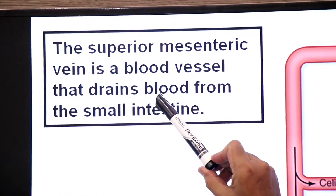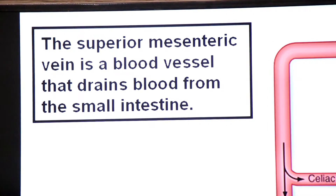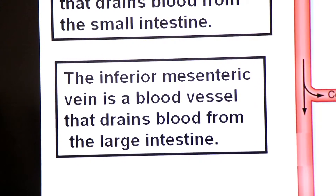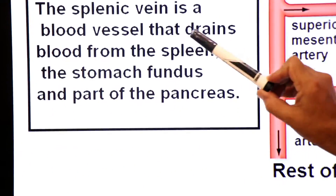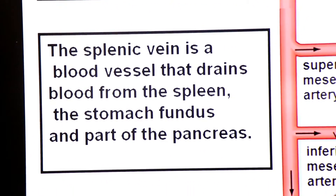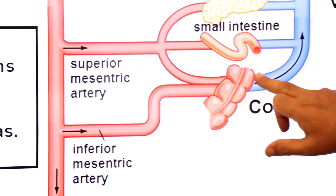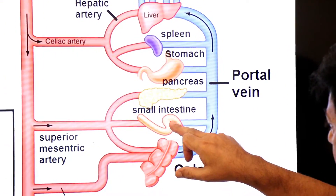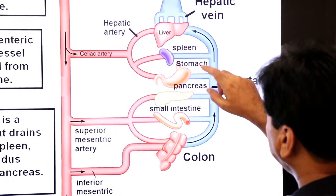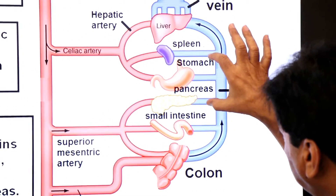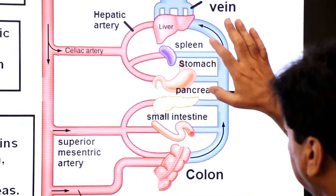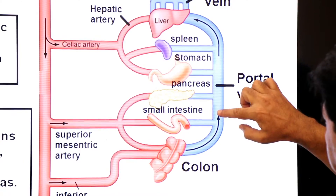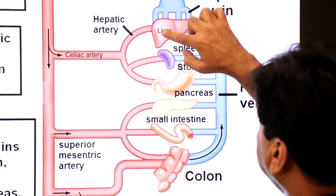The superior mesenteric vein is a blood vessel that drains blood from the small intestine. The inferior mesenteric vein drains blood from the large intestine. The splenic vein drains blood from the spleen, stomach, and pancreas. These three veins combine to form the hepatic portal vein, which delivers blood to the liver. From the liver, blood is then delivered to the heart.